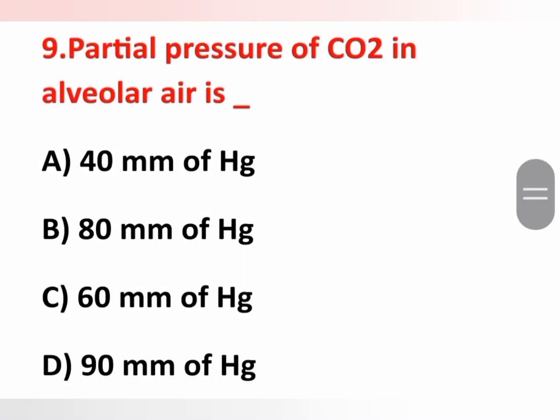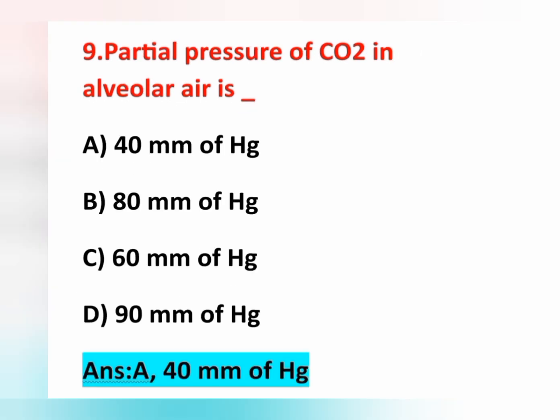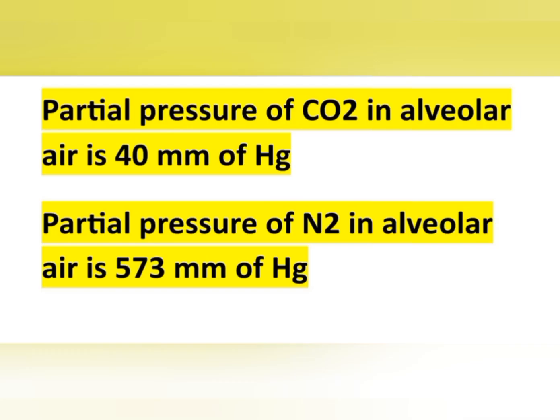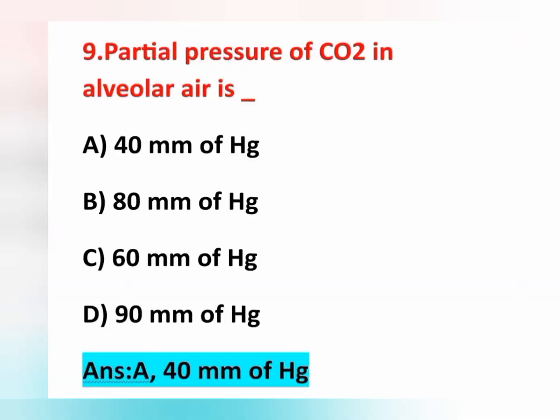Ninth question: partial pressure of carbon dioxide in the alveolar air is? Options are: option A, 40 mmHg; option B, 80 mmHg; option C, 60 mmHg; option D, 90 mmHg. The correct answer is option A, 40 mmHg. The partial pressure of carbon dioxide in alveolar air is 40 mmHg, and the partial pressure of nitrogen in alveolar air is 573 mmHg. Both are important points.